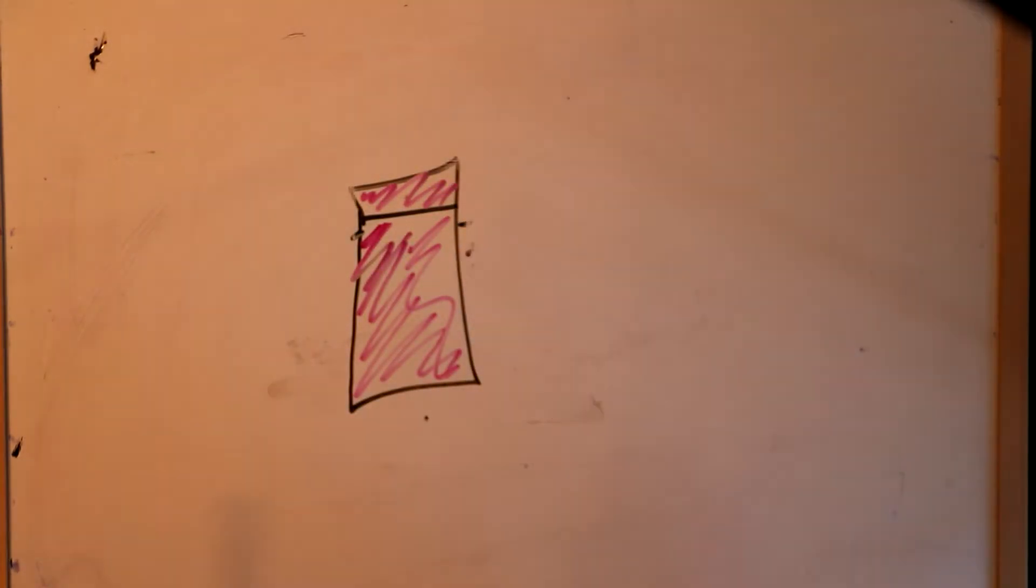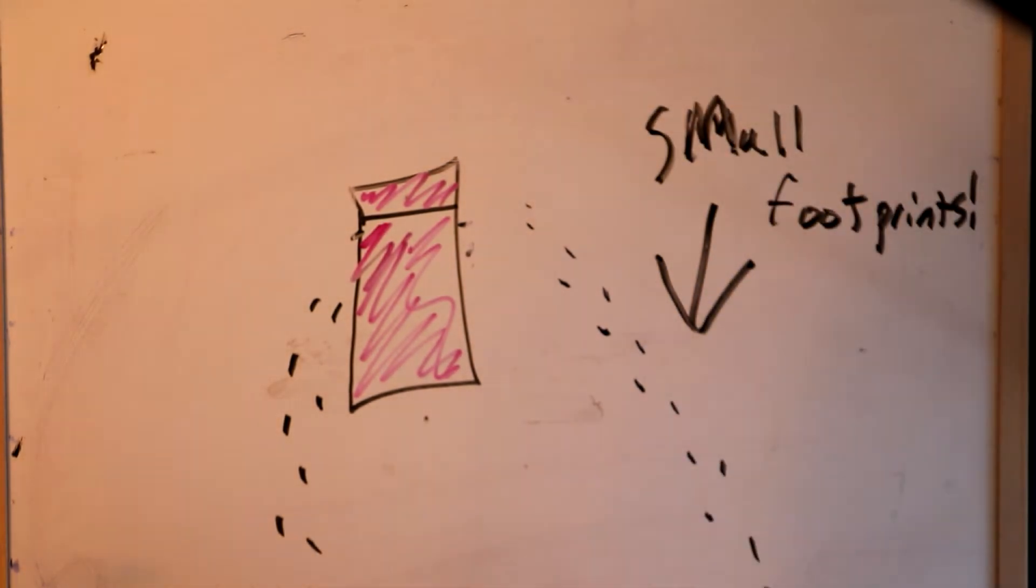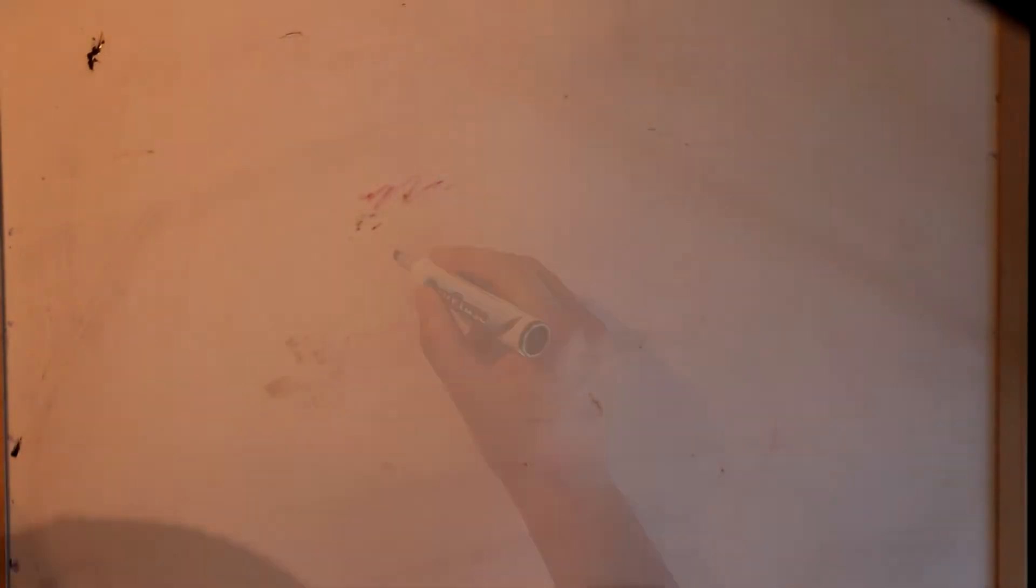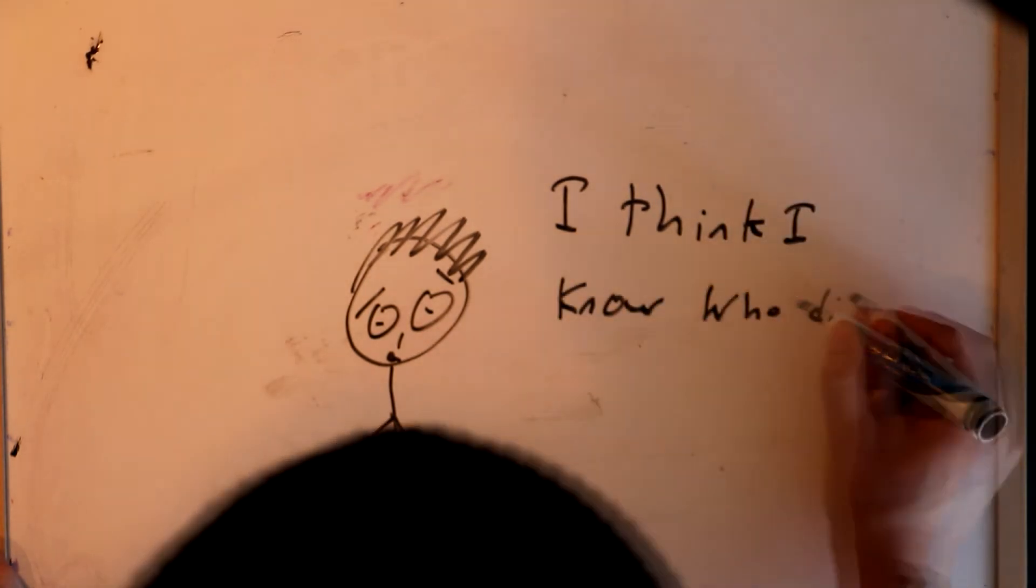So we looked outside for evidence and there it was. Two footprints. Small footprints. That's when Gate mumbled something. He was like, I think I know who did this.